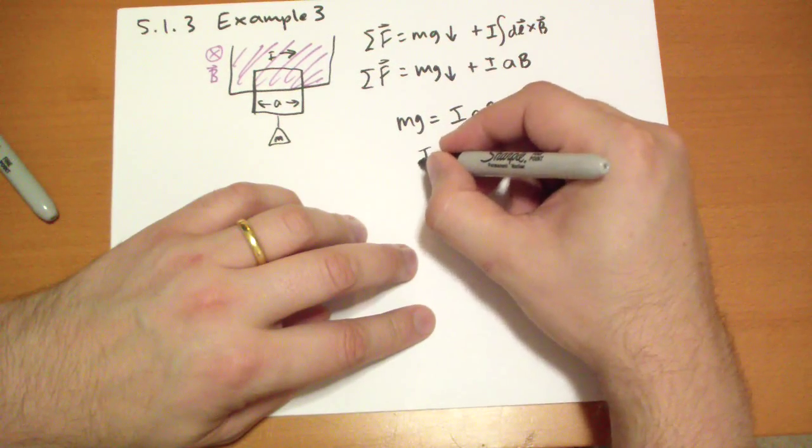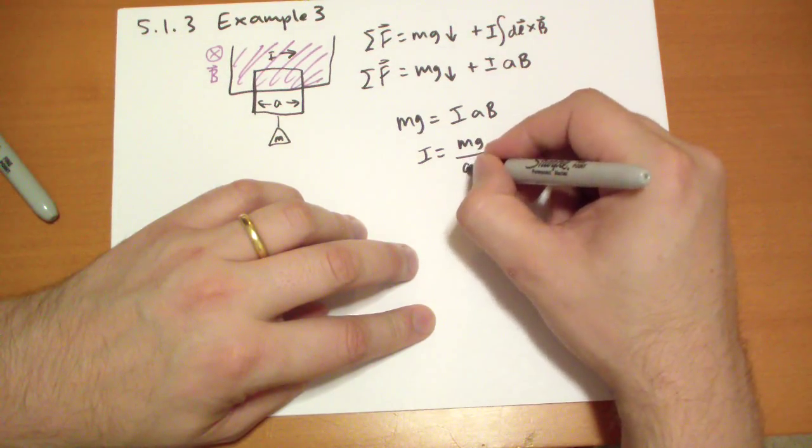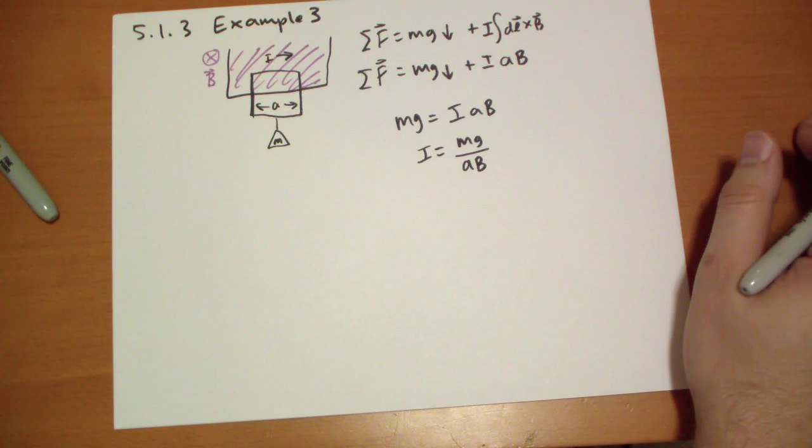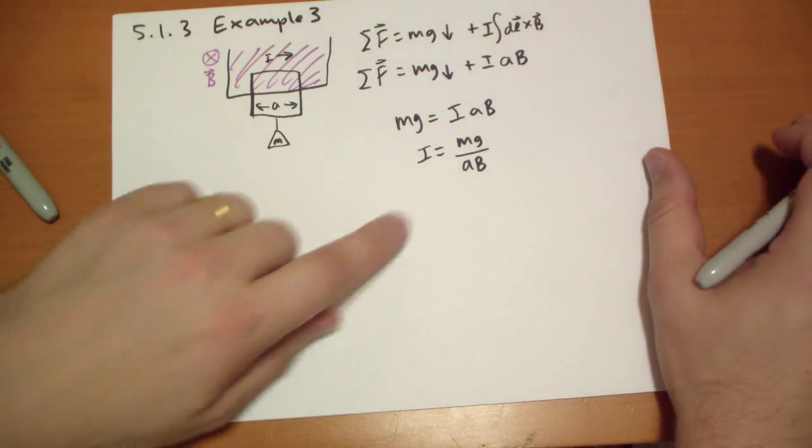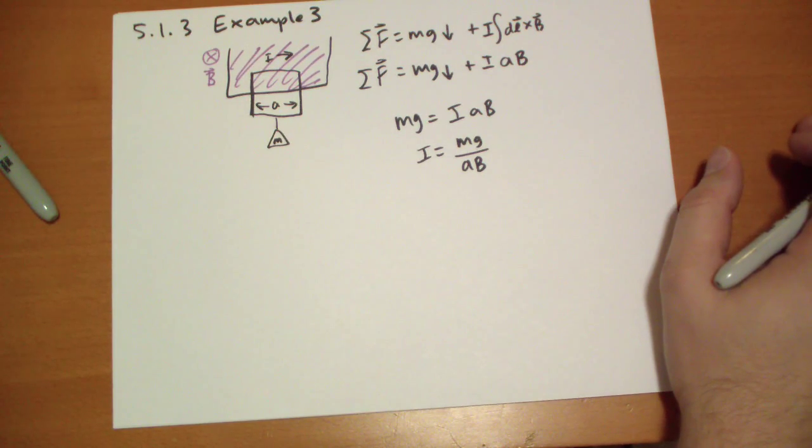So the current is just the mass times the gravitational acceleration divided by the length of that wire, the width of the wire, times the strength of the magnetic field. And that will produce the force we need to keep this mass stationary. Since it's stationary, we don't have to worry about induced currents or anything like that.